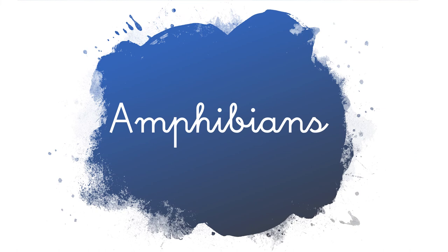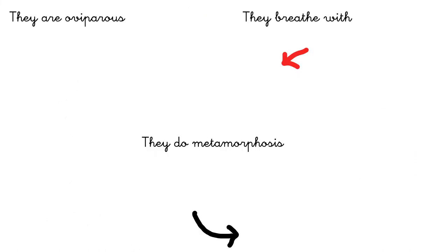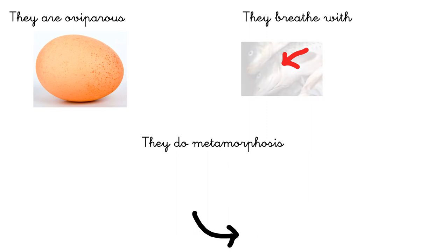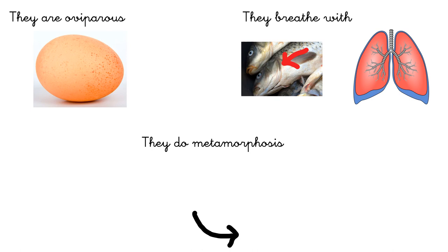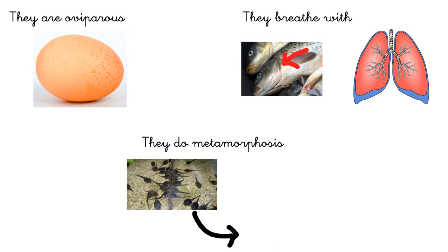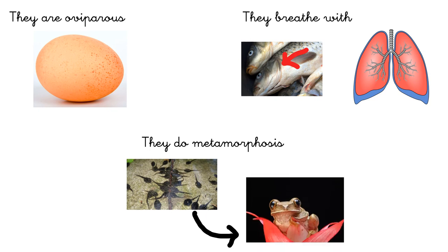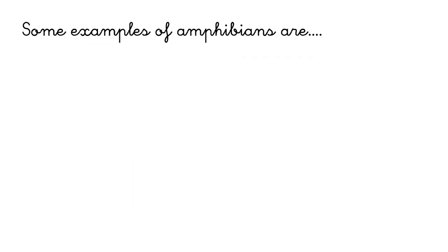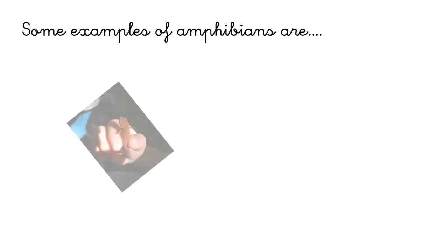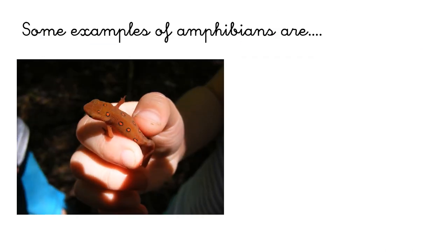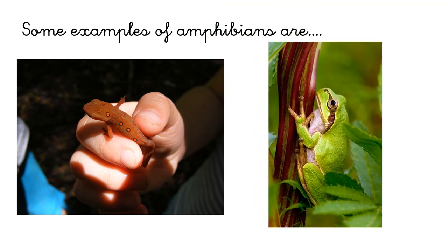And finally, amphibians. They are oviparous. They are born from an egg. They breathe with gills when they are babies, and with lungs when they are adults. And they do metamorphosis — the tadpoles become a frog when they are adults. Some examples of amphibians are the salamander and the frog.